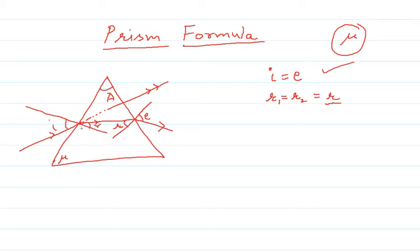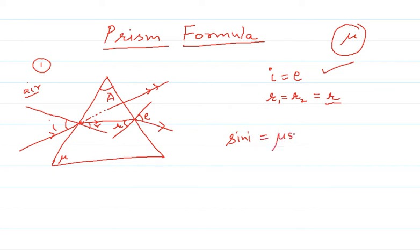We apply Snell's law to derive a relation for mu, and that relation is known as the prism formula. Applying Snell's law: the surrounding medium has refractive index 1, and the prism medium has refractive index mu. So we write sin i equals mu sin R, and therefore mu equals sin i divided by sin R.